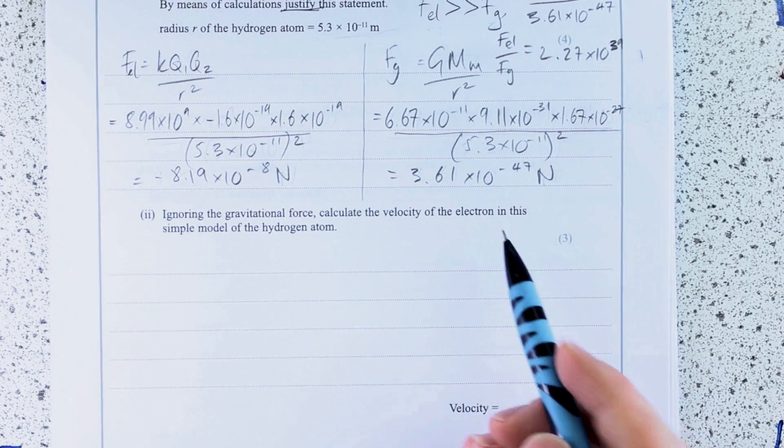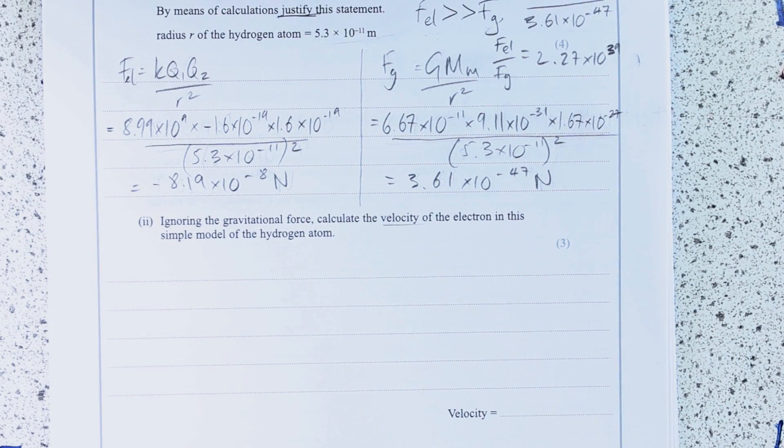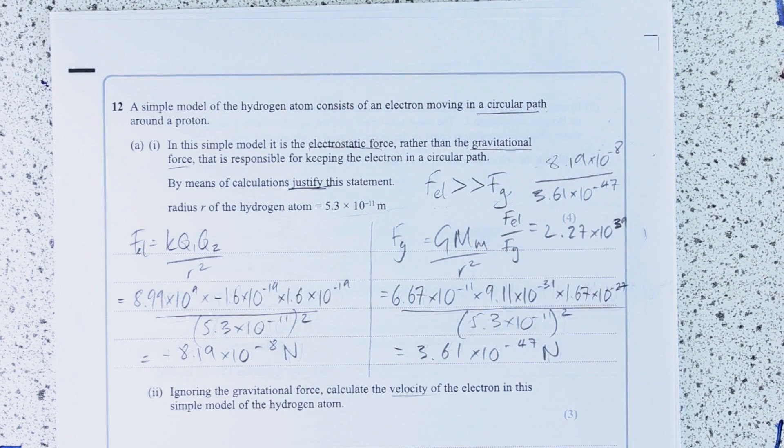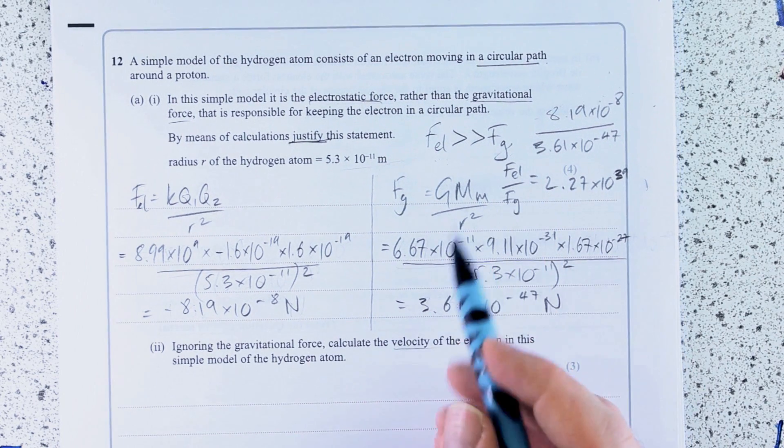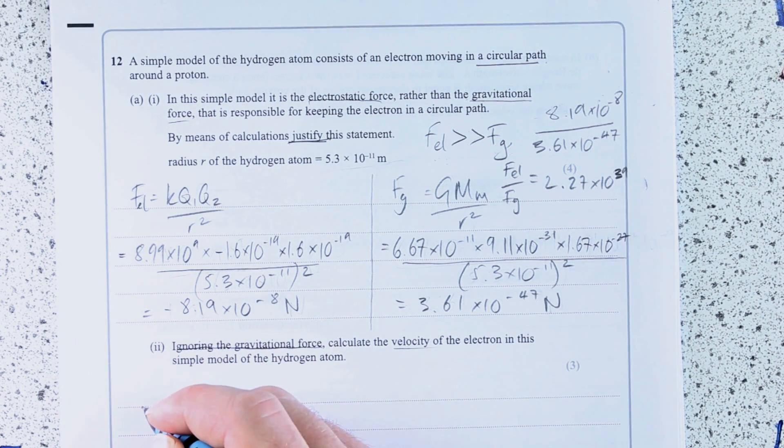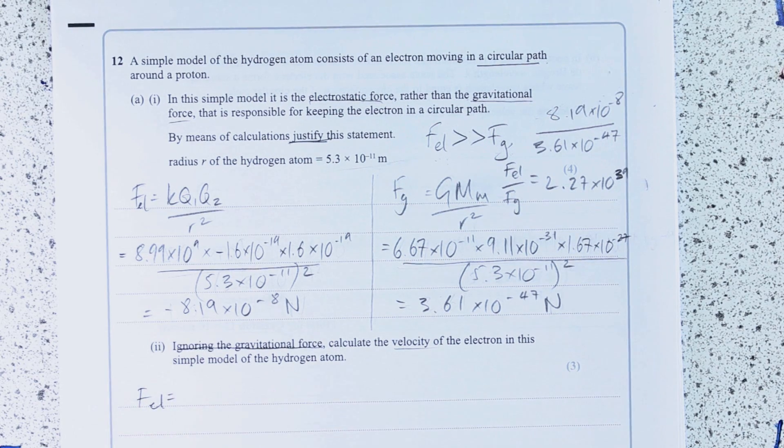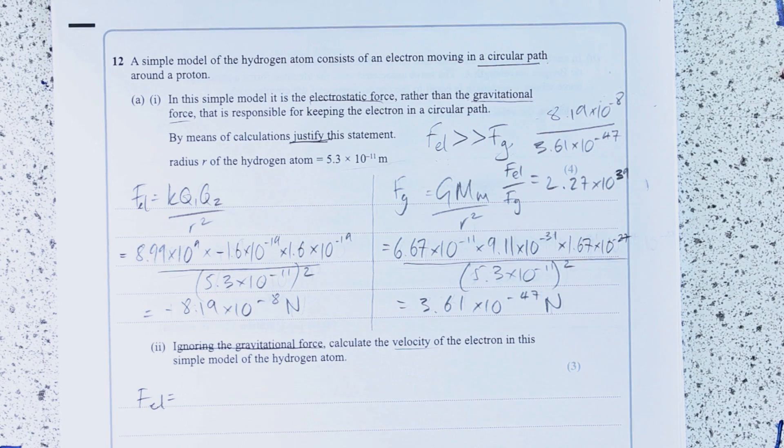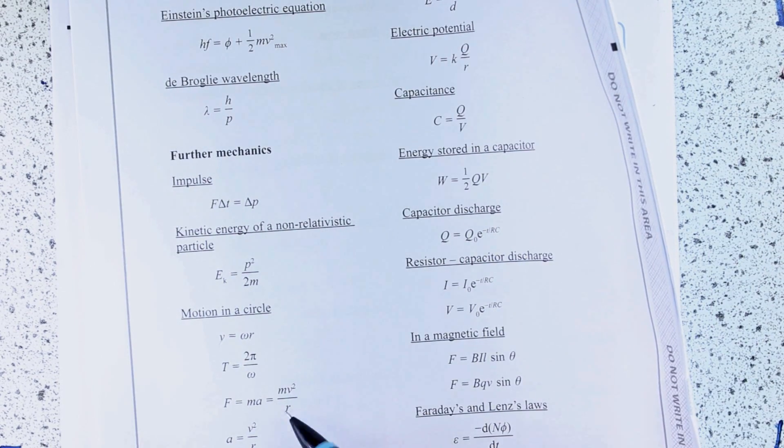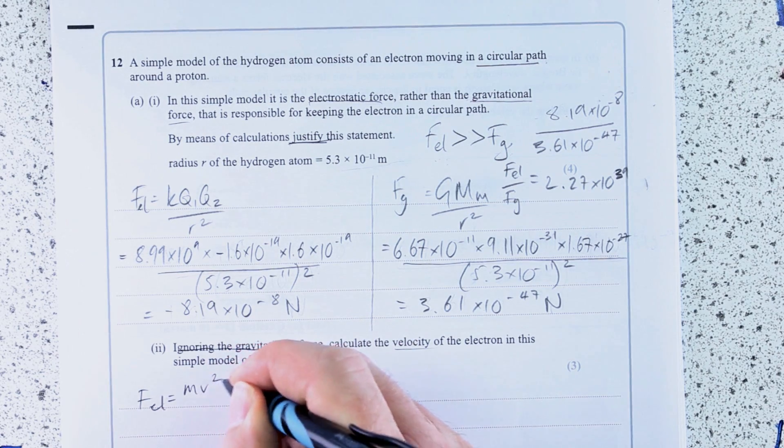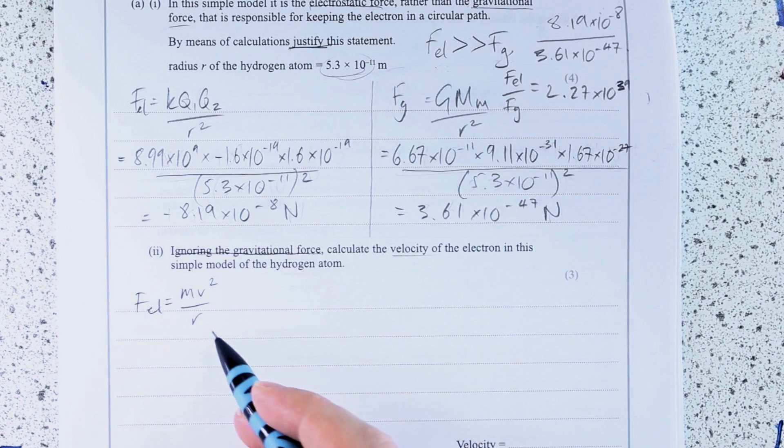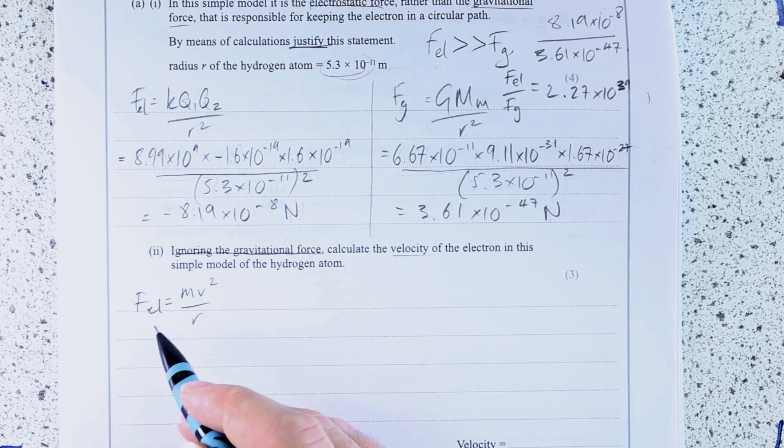Next one, ignoring the gravitational force, calculate the velocity of this electron in a simple model of a hydrogen atom. When we look back at the stem, because this is all part of A, and the information they've given us in the stem is that it's a circular path, so I can use my circular mechanics here. I've been told to ignore the gravitational force, so that's fine. So I'm just talking about this force here. What I'm saying is the Coulomb force is equal to something to do with my circular motion. So I'm going to go to my circular motion equation sheet, motion in a circle here.